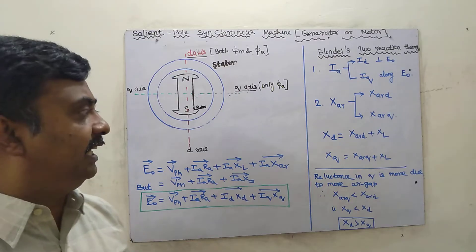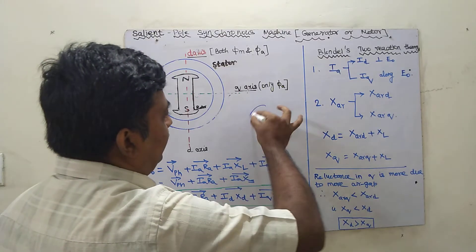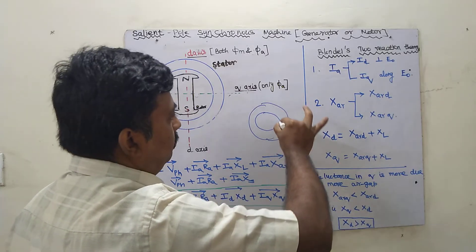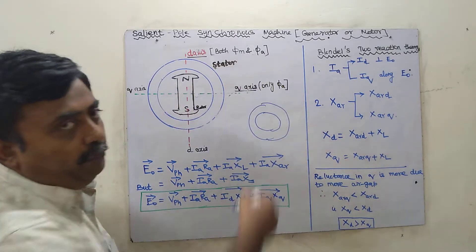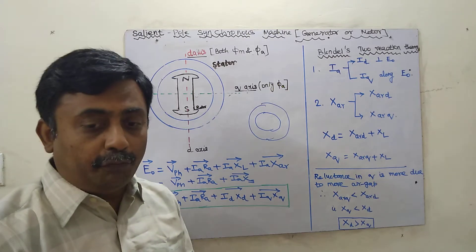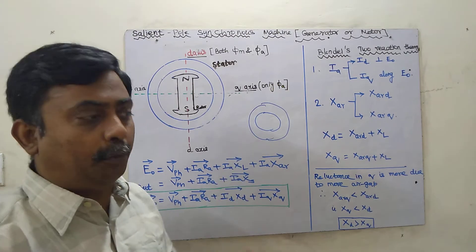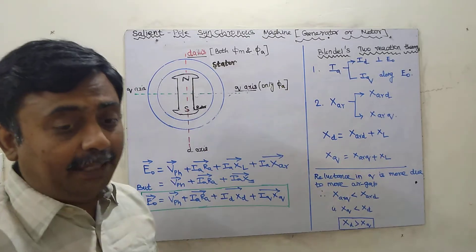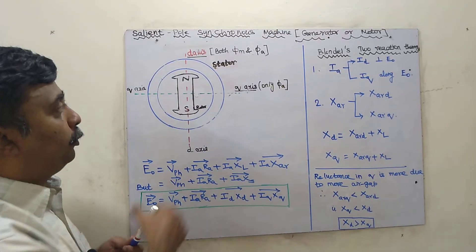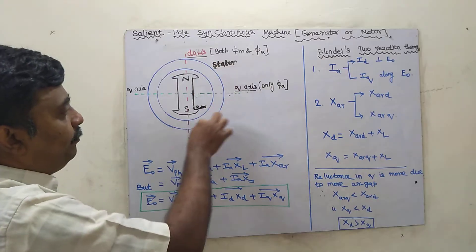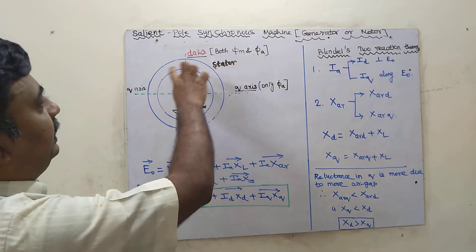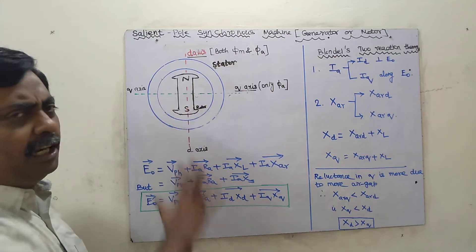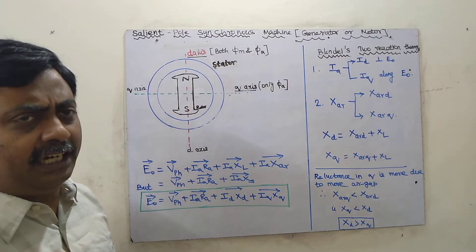In a non-salient pole machine, the stator is round in shape and the rotor is also round in shape, so the air gap will be uniform. This is called non-salient pole — the poles won't be projected. But now we are going to see about salient pole, where the poles will be projected, as shown in the diagram for a salient pole synchronous machine.